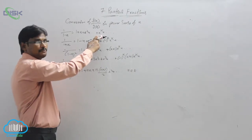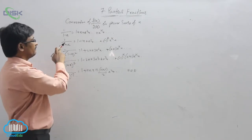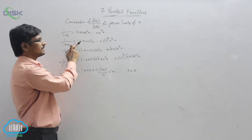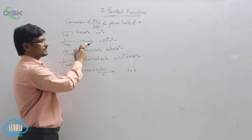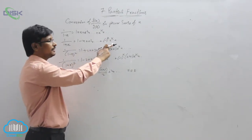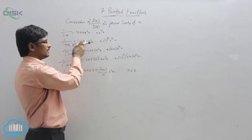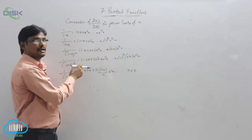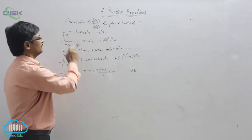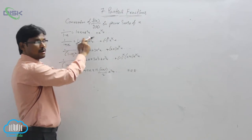If it is 1 by (1 plus x), the power series expansion will be 1 minus x plus x squared, and so on, plus (-1) to the power k into x to the power k, and so on. These are the expansions we can use. By using the binomial theorem we can do the expansions.